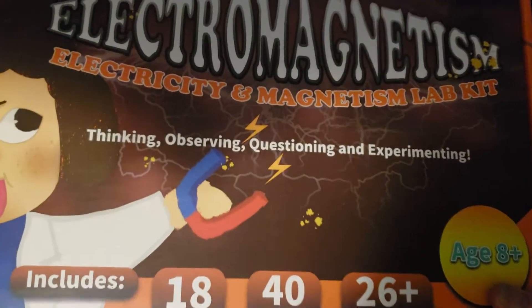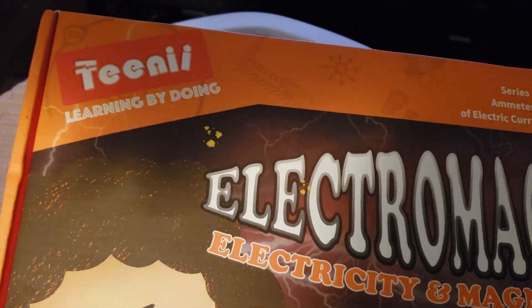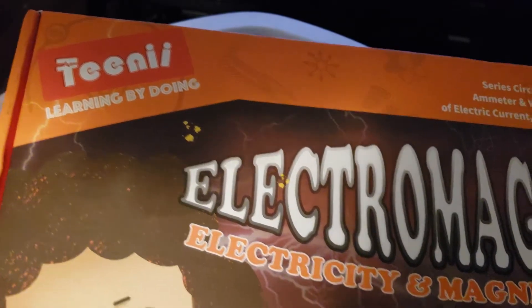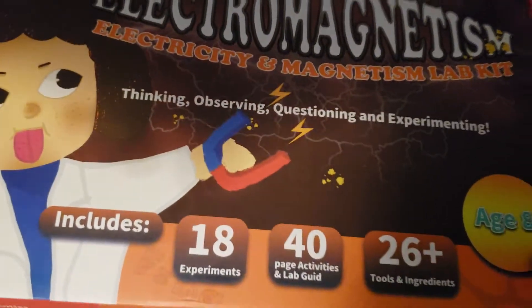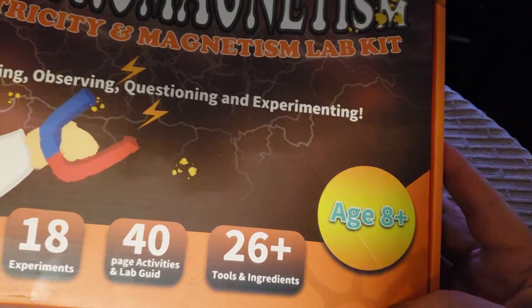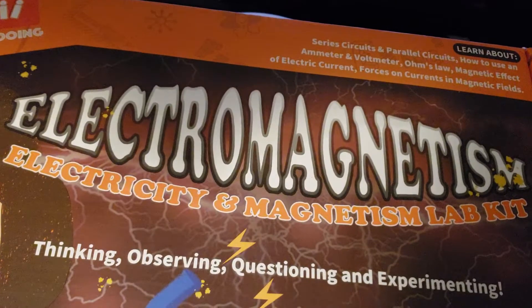Here's a kit from Amazon made by TENII, $60 to teach kids from eight years old about electricity and magnetism.